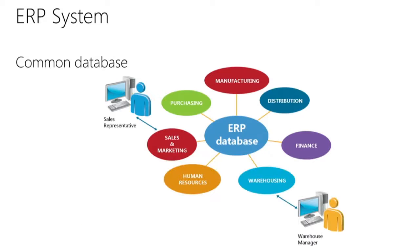ERP systems don't have this limitation because all of the information is found in one common database. For example, even though a warehouse supervisor enters information into the system by using the warehousing module, that information is visible across the entire enterprise and available in all of the departments. Now, besides having all of the information available in one database, there are three main characteristics that an ERP system needs to comply to.